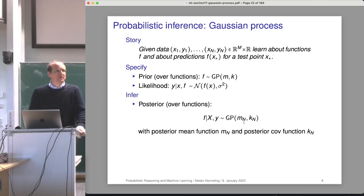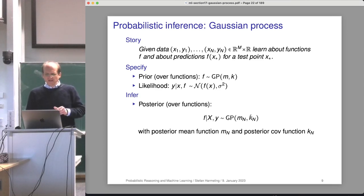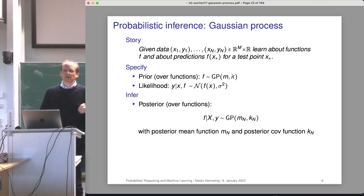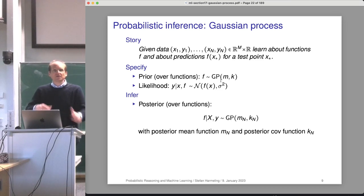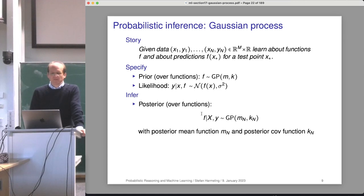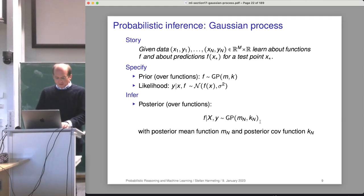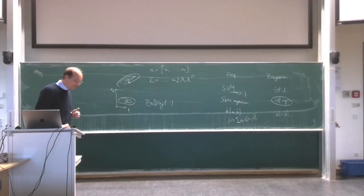The subscript n means we've seen n data points, so the original M and K become M_0 and K_0. Interestingly the K is updated as well — in the SVM you choose K once and have predictions, but in Bayesian inference we want a new distribution over functions, so we also get a new covariance function.